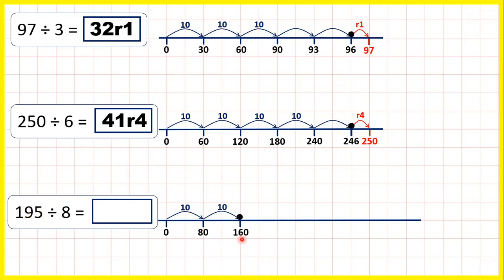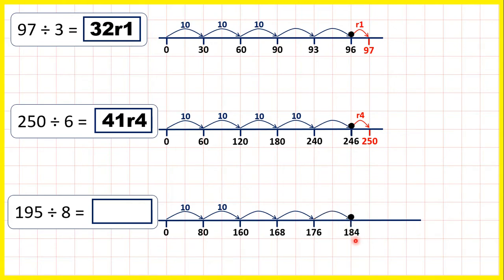So from 160, we can now just jump in steps of 1 times 8. Adding another 8 takes us to 168, then 168 plus 8 is 176. Then another 8 takes us to 184, and another 8 takes us to 192. But we need to stop here, because if we jumped another 8, that would take us to 200, and that would be too many.